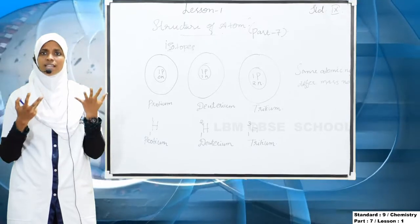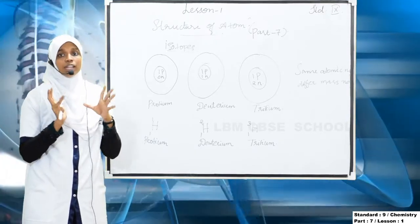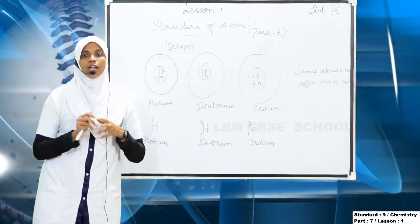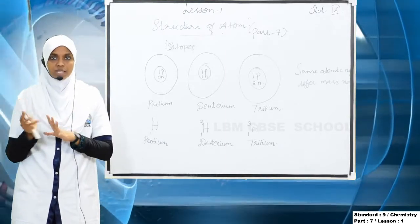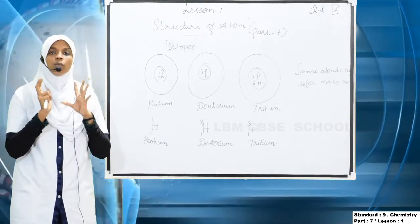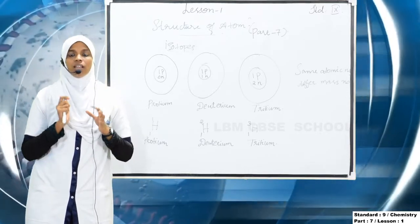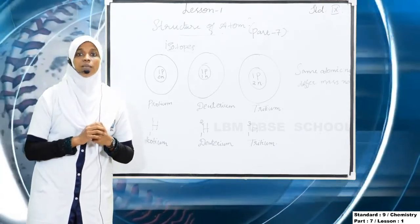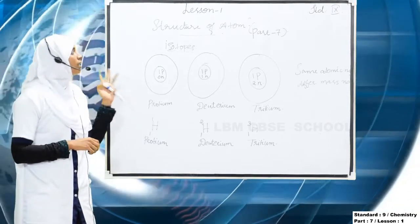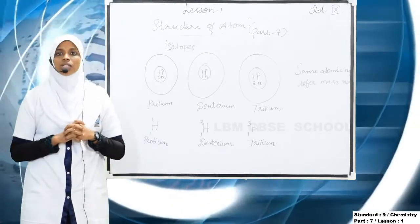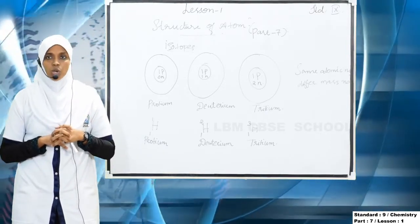What is an atomic number? Atomic number is the identity of an atom. Atomic number is represented by the letter Z. And now we are going to learn the new concept that is the isotopes.